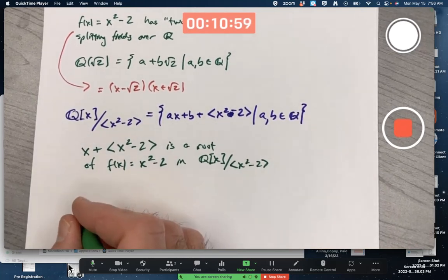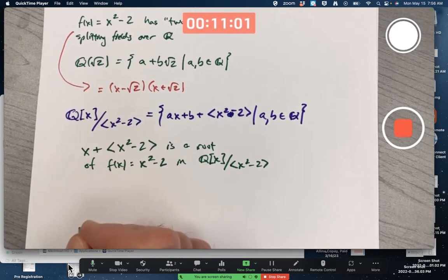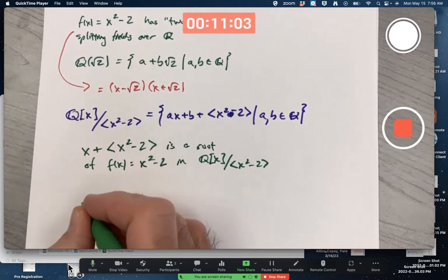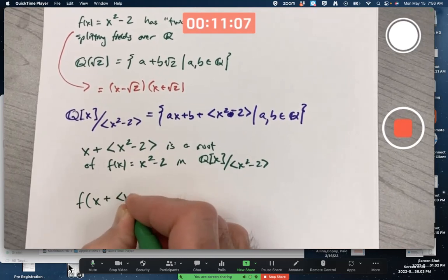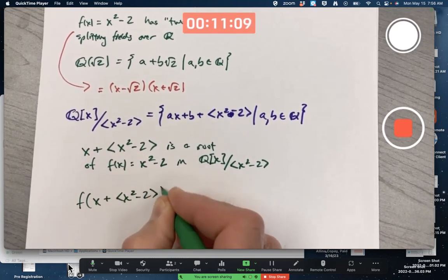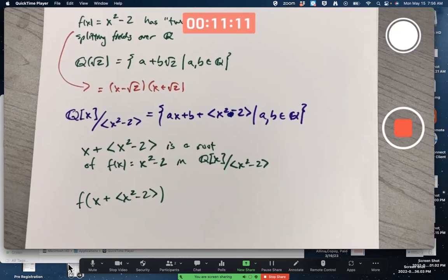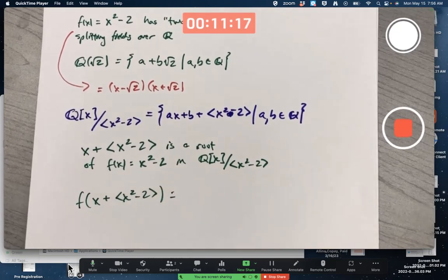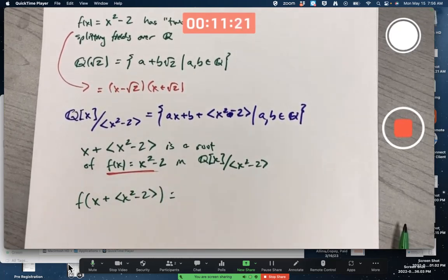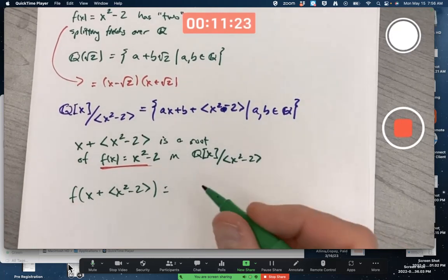Check it out. Plug in and f in place of x. What is f of this coset? How do I do that? Well, just do what you think you would do in f(x) in the formula, replace x with that coset and simplify.